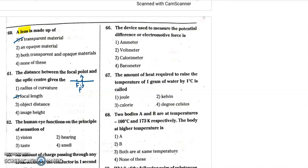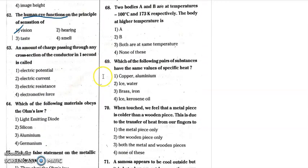Question 62: the human eye functions on the principal basis of refraction. Question 63: the amount of charge passing through any cross-section area of a conductor in one second is called electric current. So question 63, option 2 is correct.